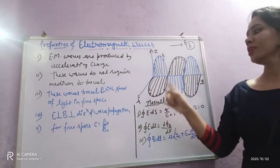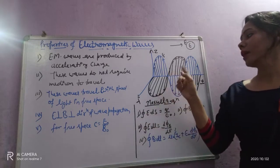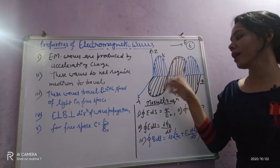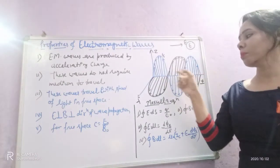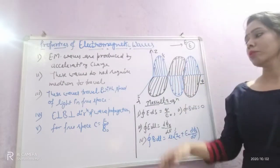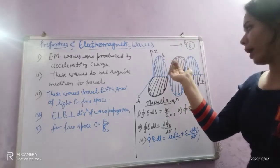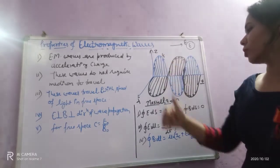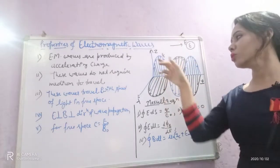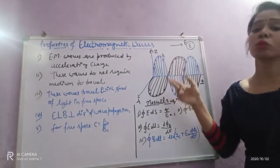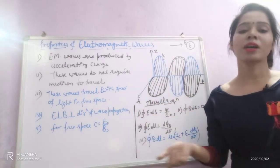The next property is that electromagnetic waves are always perpendicular to the electric and magnetic fields. The direction of wave propagation is always perpendicular to both the electric and magnetic fields. For example, if the electric field is along the z-axis and the magnetic field is along the y-axis, then the direction of propagation will be perpendicular to both — that is, in the x-direction. Using the E cross B right-hand rule, if E is in z and B is in y, the thumb shows the x-direction, which is the direction of propagation. That is why electromagnetic waves are transverse in nature.